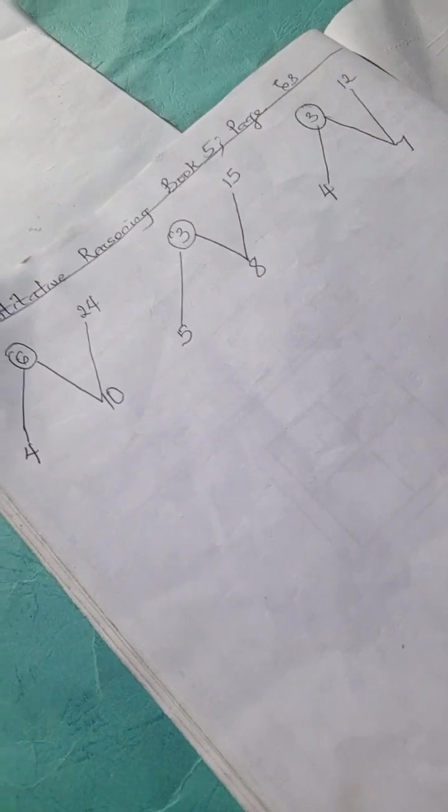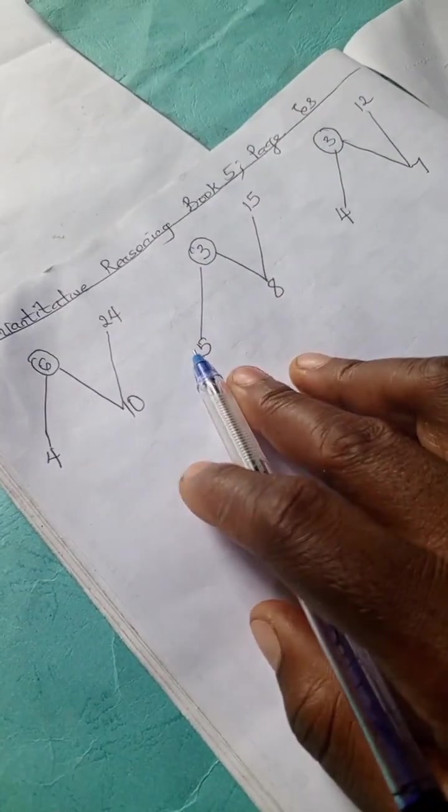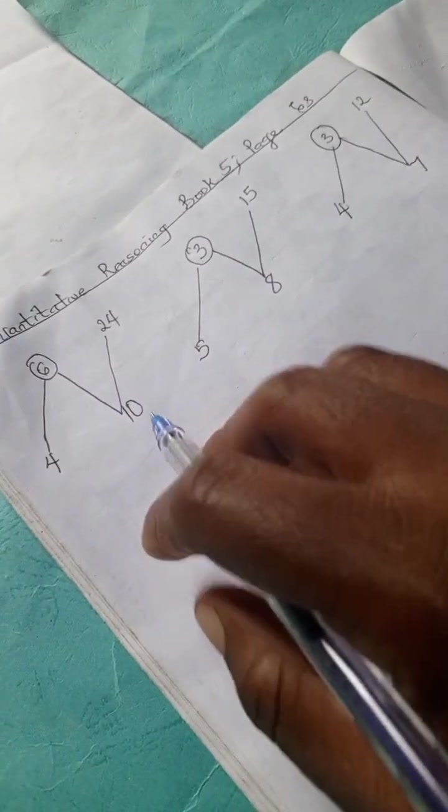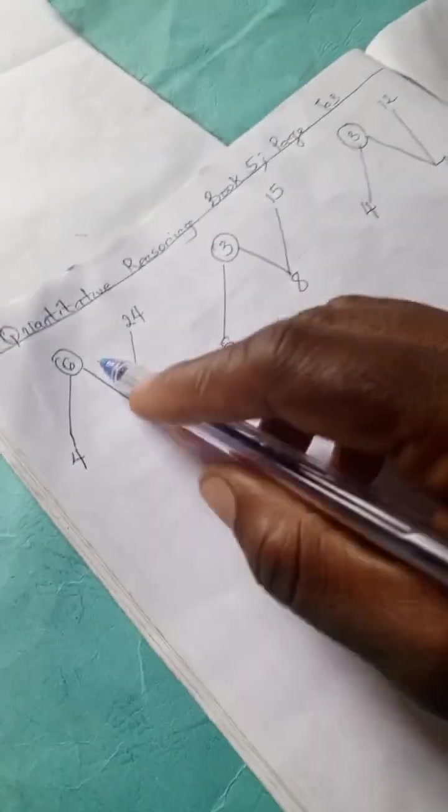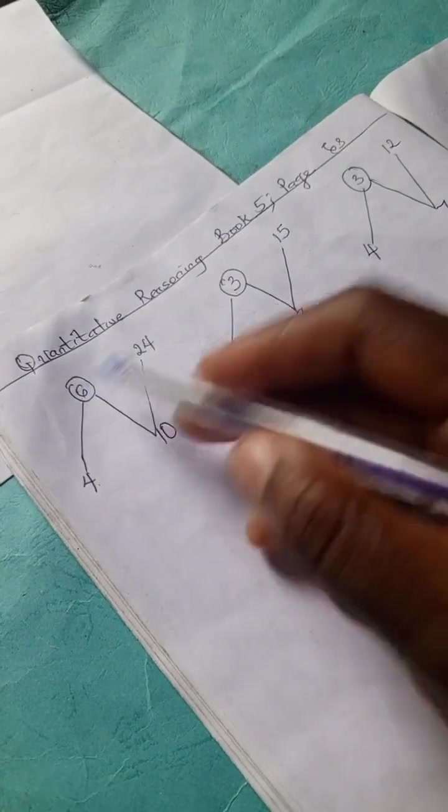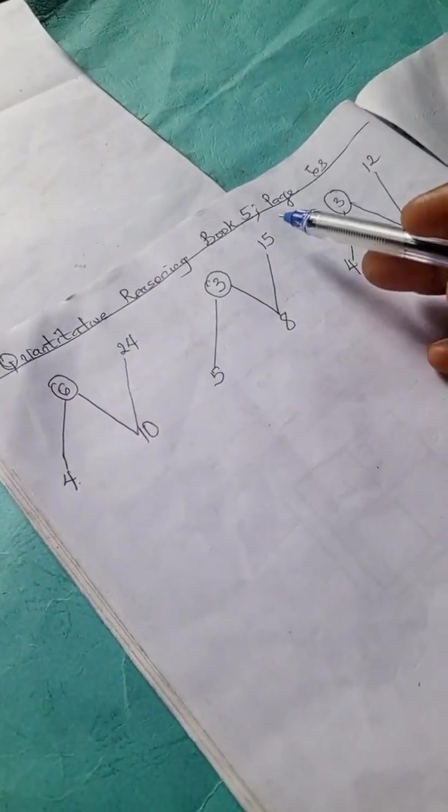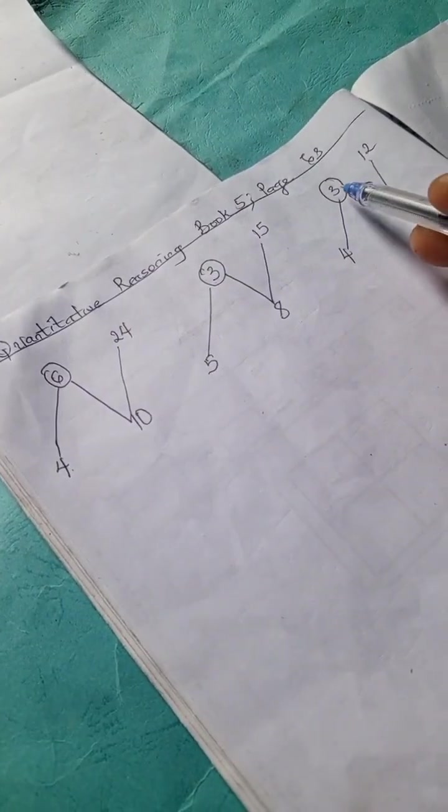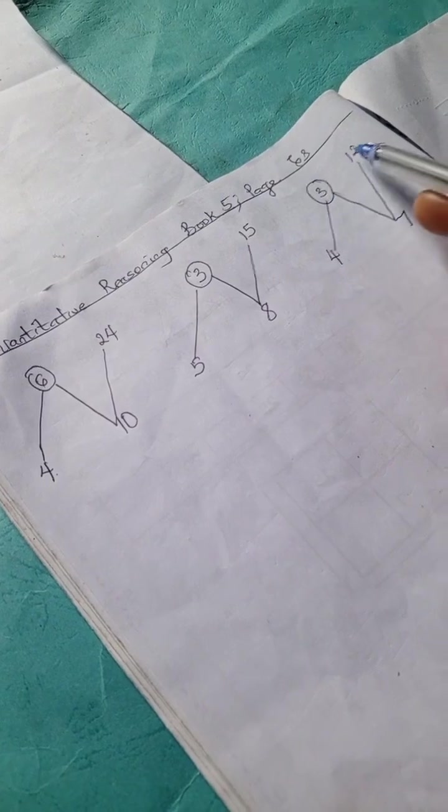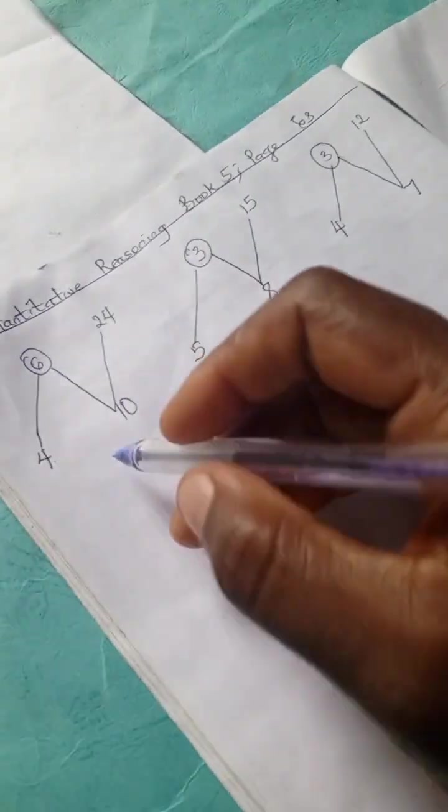Alright, so here we have Quantitative Reasoning from Lantern Step, book 5, page 63. Alright, so we have this problem. We have 4, 6, 24, 10. And here we have 3, 5, 15, 8. And here we have 3, 4, 12, and 7.